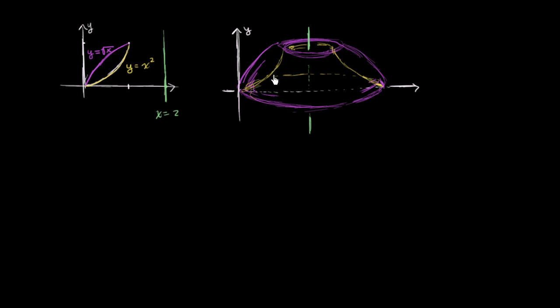This right here is a solid of revolution whose volume we were able to figure out in previous videos, actually in a different tutorial, using the disk method and integrating in terms of y. What we're going to do now is we're going to find the same volume for the same solid of revolution, but we're going to do it using the shell method and integrating with respect to x.